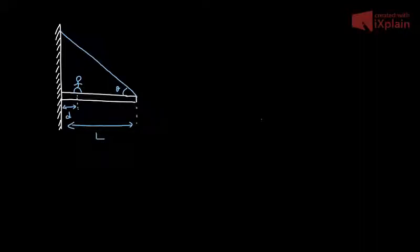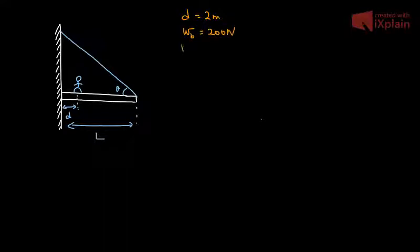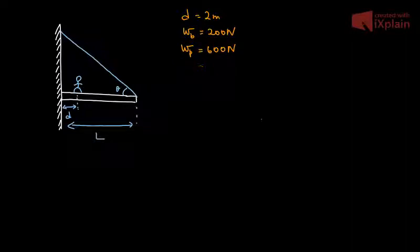Consider a uniform horizontal beam attached to a wall where its far end is supported by a cable. A person is standing two meters away from the wall. D equals two meters, the weight of the beam equals 200 newtons, the weight of the person equals 600 newtons, and the length of the beam is eight meters.